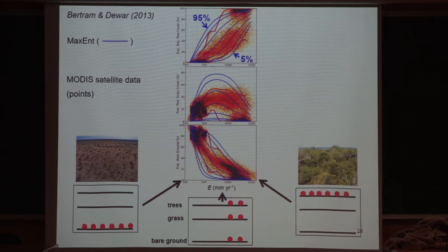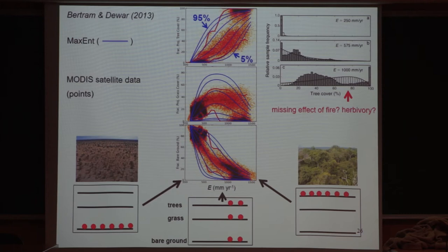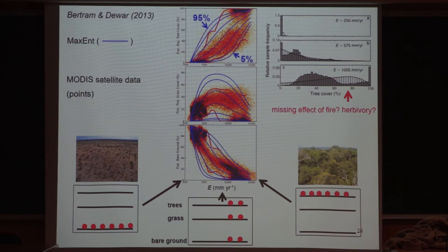There are certain things we do not capture. In the top panel for fractional tree cover, there's a gap in the density of points at around 1200 millimeters per year at about 70% tree cover. We cannot capture that with a maximum entropy distribution. The mismatch signals that we are missing a constraint — in that particular case, we may in fact need to model fire and herbivory as more than just random noise in order to capture that effect.